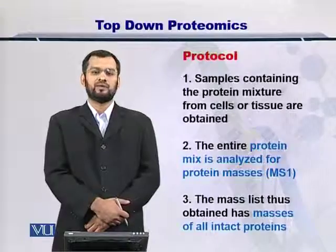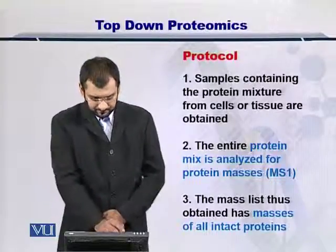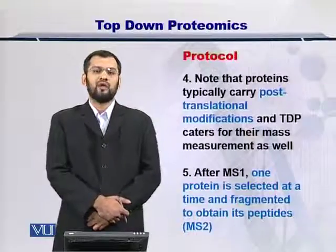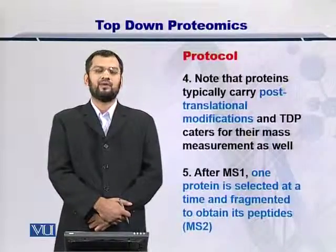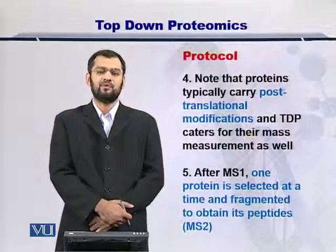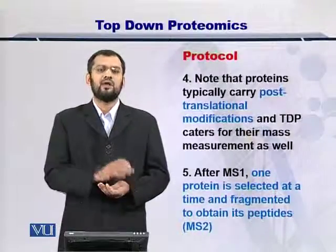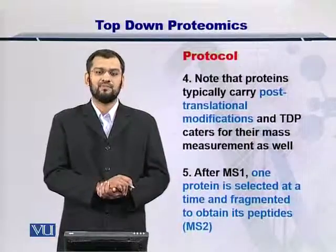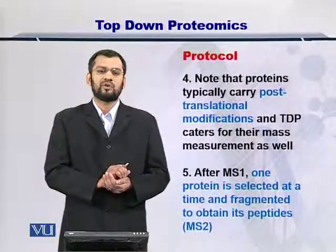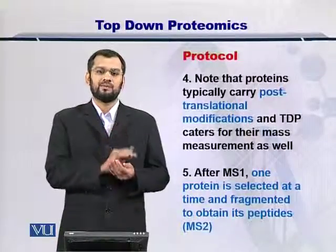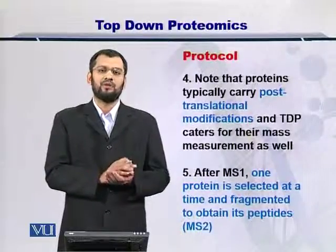In the top-down proteomics approach, we treat the entire precursor protein and we obtain its molecular weight. Once you have obtained the molecular weight of the entire protein, then you can fragment the protein using fragmentation techniques such as electron capture dissociation, collision-induced dissociation, or electron transfer dissociation. We need these fragmentation methods because the protein in top-down proteomics is already present inside the chamber — the mass analyzer of the mass spectrometer — and is therefore not open for enzymatic digestion.